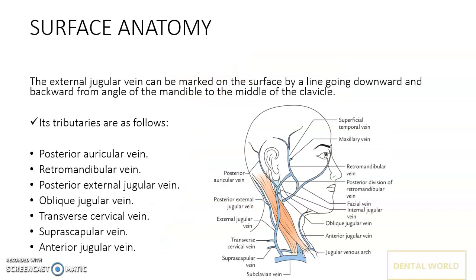Now I will discuss the surface anatomy of the EJV. The EJV can be marked on the human body surface by a line going downward and backward from the angle of the mandible to the middle of the clavicle, or the mid third of the clavicle.